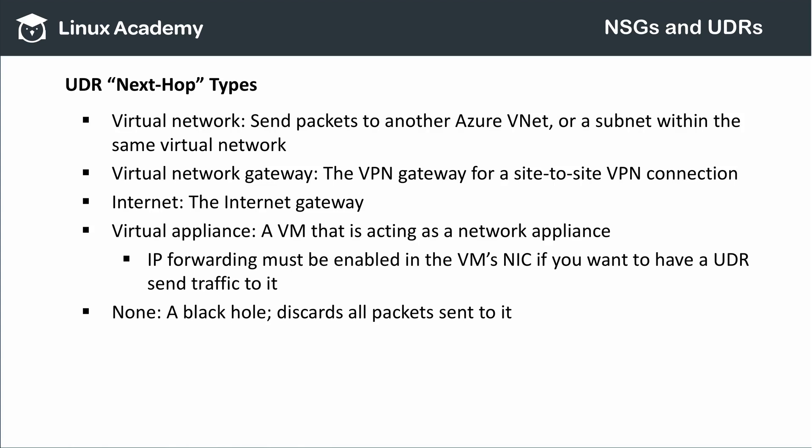What are the kinds of middlemen I can institute with a user-defined route? I can specify another virtual network or subnet as my next hop, or specify the VPN gateway if working with a site-to-site VPN connection. I can work with the internet gateway that's part of my virtual network, or a virtual machine that I create as a network appliance. Note that if I'm going to use a VM as a network appliance, I must enable IP forwarding on that virtual machine's network interface. Alternatively, I can create a black hole, which will swallow up all packets routed to it — useful if you want to cease all outbound traffic from a selected subnet but cannot silence the network traffic of VMs within that subnet.